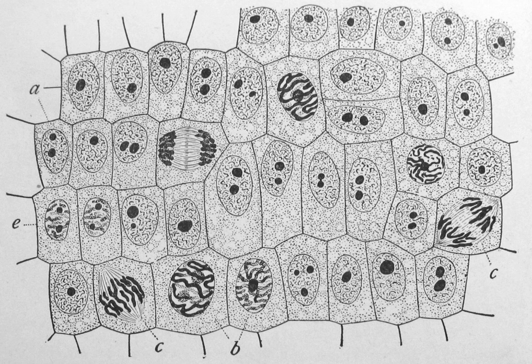The primary function of the Golgi apparatus is to process and package the macromolecules such as proteins and lipids that are synthesized by the cell. Lysosomes contain digestive enzymes. They digest excess or worn-out organelles, food particles, and engulfed viruses or bacteria. Peroxisomes have enzymes that rid the cell of toxic peroxides. The cell could not house these destructive enzymes if they were not contained in a membrane-bound system.